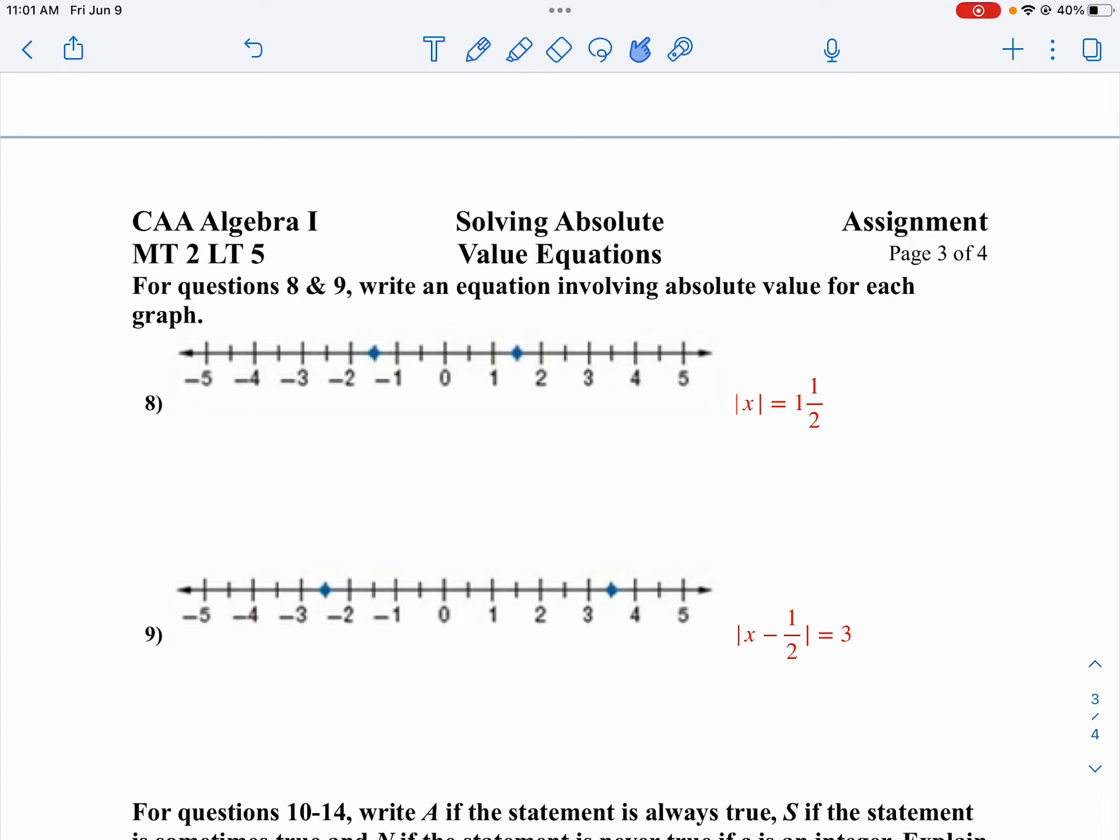So first off, I want to find what is in the middle between negative one and a half and positive one and a half. Well, the middle of that one would be zero, because zero is exactly in the middle. And then it's one and a half to each side, isn't it? To each number.